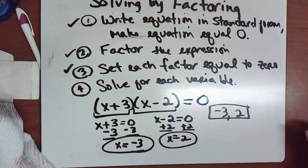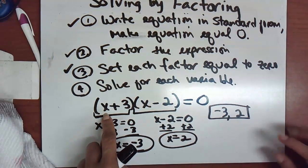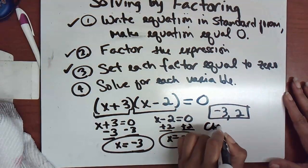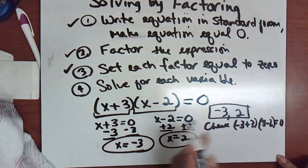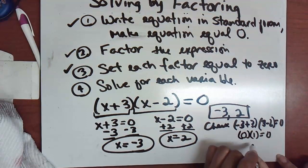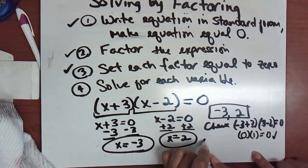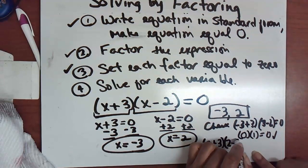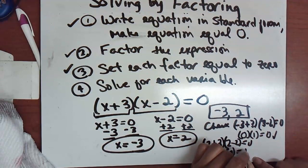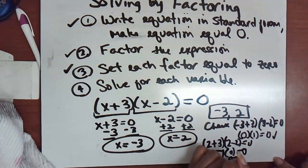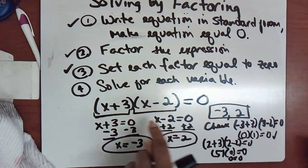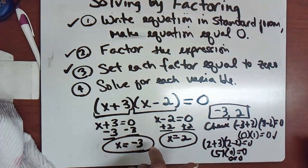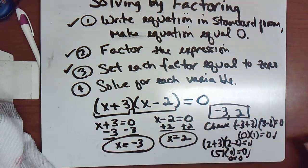You can check your answers by substituting them back into the original equation one at a time. Plugging in x = -3: you get 0 × 1 = 0 — true. Plugging in x = 2: you get 5 × 0 = 0, so 0 = 0 — true. A solution means substituting the value gives a true statement. Both check out, confirming x = -3 and x = 2 are correct.